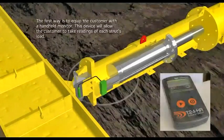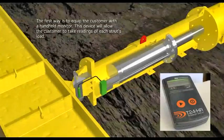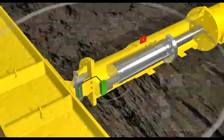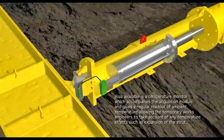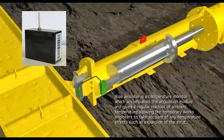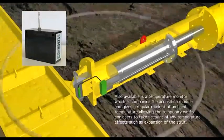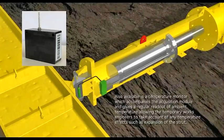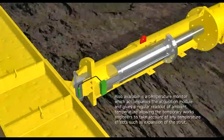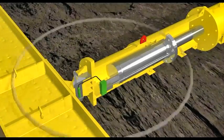The first way is to equip the customer with a handheld monitor. This device allows the customer to take readings of each strut's load. Also available is a temperature monitor which accompanies the acquisition module and gives a regular readout of ambient temperature, allowing the temporary works engineers to take account of any temperature effects, such as expansion of the struts.